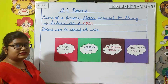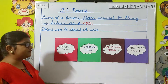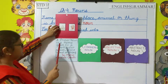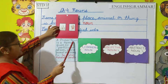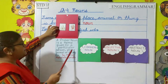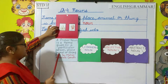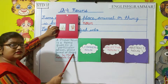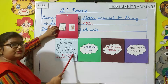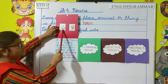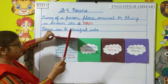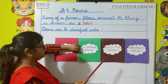Now we are going to see the definition of these nouns one by one. First, proper noun. A proper noun is a name given to a particular person, place, animal, or thing. For example, Taj Mahal, Mahatma Gandhi.